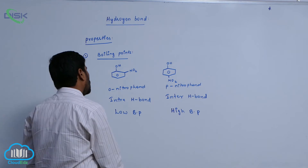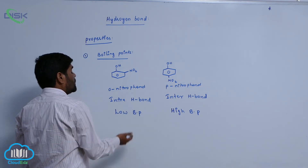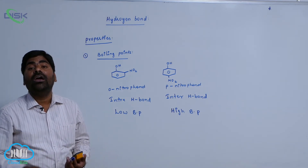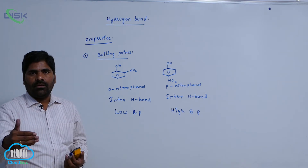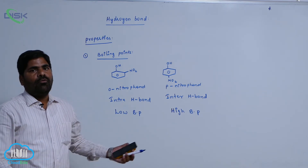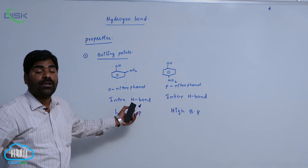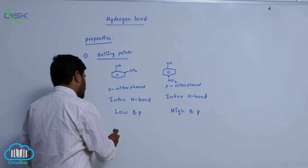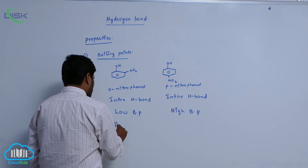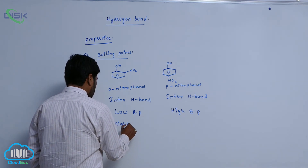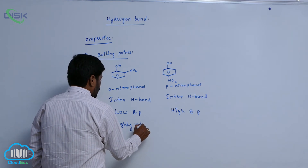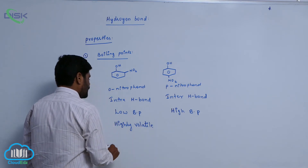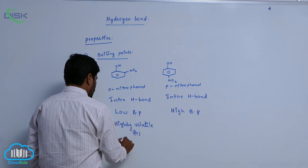Low boiling point — if the boiling point of the compound is low, it is easily volatile. So that is the reason why due to low boiling point, volatility increases for ortho-nitrophenol when compared to para-nitrophenol. Therefore, ortho-nitrophenol is a highly volatile or steam volatile compound.